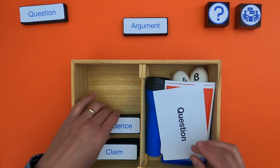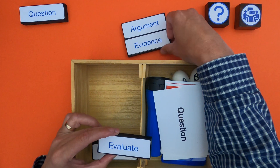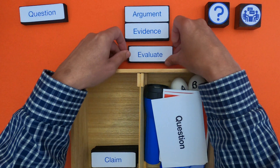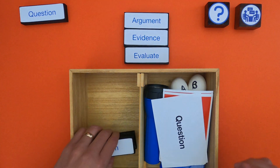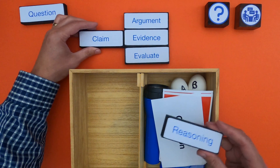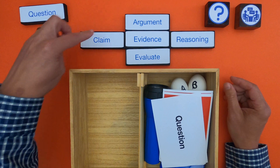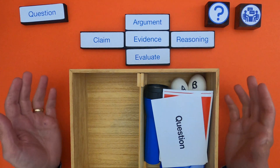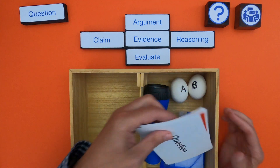As I go through teaching argumentation, I always like to start with the evidence. So we look at the evidence first, and then we carefully evaluate the evidence — is this all the evidence we need, or do we need more? And then you're going to make a claim, and then include reasoning. So a proper argument will always be presented in this direction: claim, evidence, and reasoning. But the order in which you develop it, I like to start with the evidence.